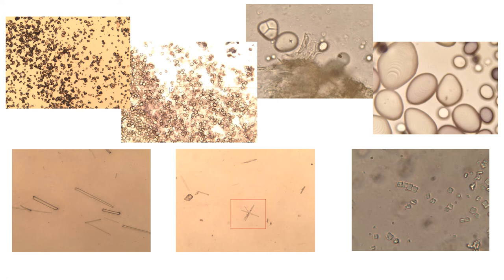Under the microscope, starch grains appear distinctively by type. Rice starch grains are the smallest. Wheat starch grain has its own characteristic appearance. Maize starch can be identified by a Mercedes-logo-like or star-shaped hilum at the center. Potato starch grains are the largest, with a muscle-like shape and striations over the surface — a typical characteristic of potato starch.